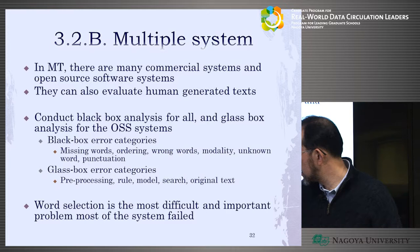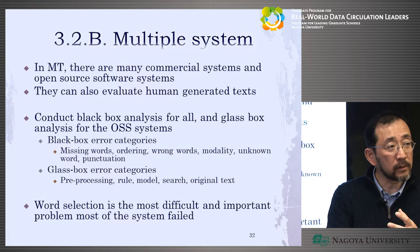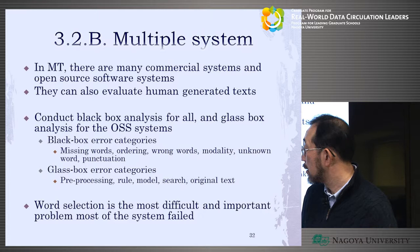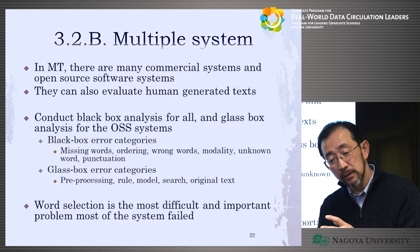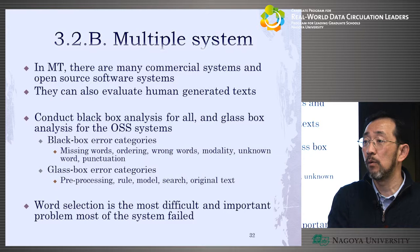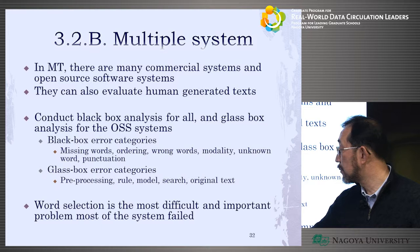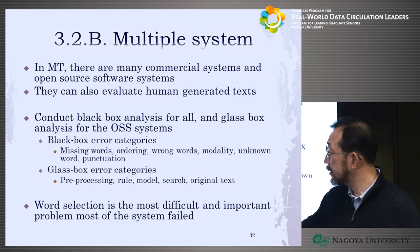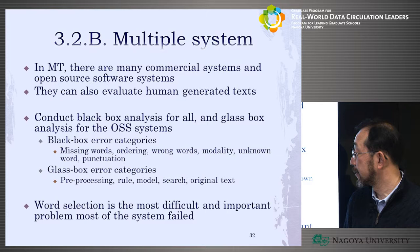The glass box error analysis tries to understand what caused the mistake — what kind of algorithms make these mistakes. Errors are caused by pre-processing: they have to use basic technologies like morphological analyzers and parsers, and if there's a mistake at the pre-processing step, they cannot create the correct answer. Other causes include a wrong rule, wrong model, wrong search, or errors in the original text. These are the errors analyzed in glass box analysis.